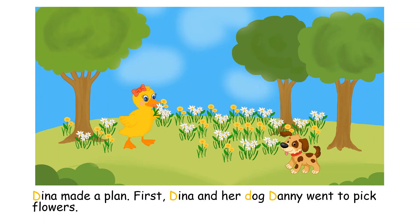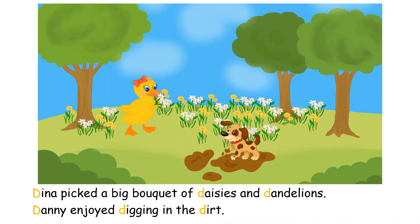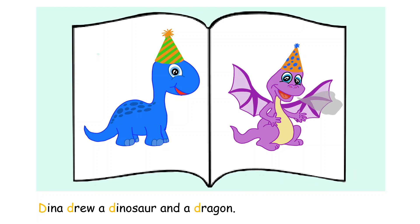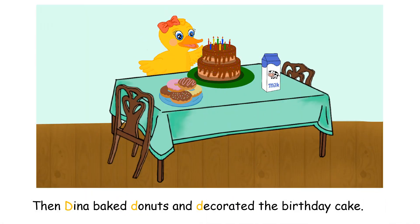Dina picked a big bouquet of daisies and dandelions. Danny enjoyed digging in the dirt. Dina decided to draw a card for her dad. Dina drew a dinosaur and a dragon. Then Dina baked doughnuts and decorated the birthday cake.